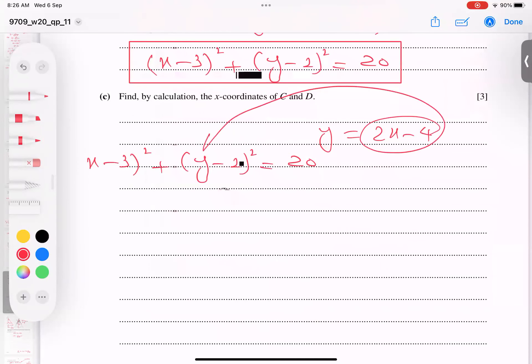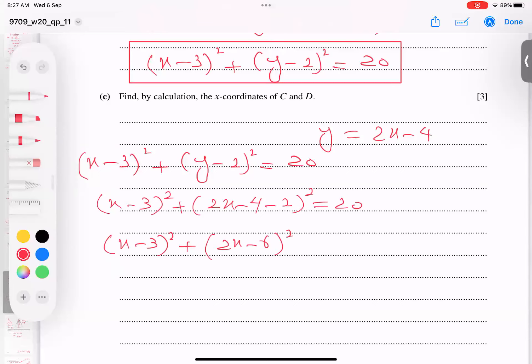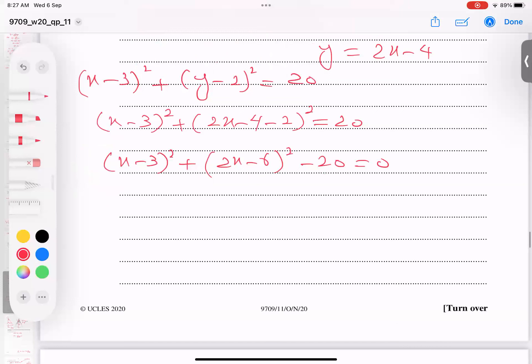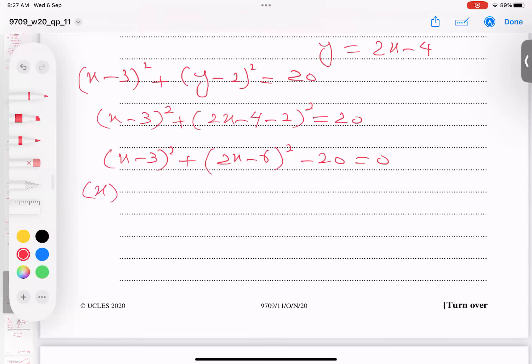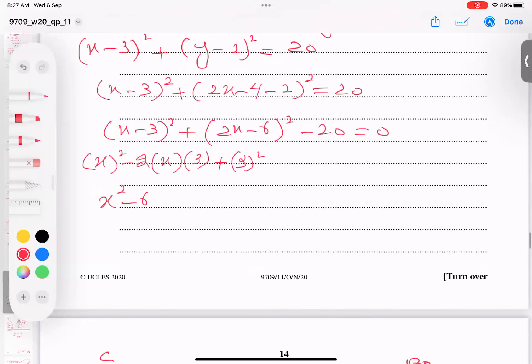So this Y value I'm going to plug in here. So here we have to expand. And Y value is this, so 2X minus 4, but negative 2 is already present. So I get X minus 3 whole square and 2X minus 6 whole square and negative 20 come this side. Here expand the square. I get first term square, negative 2 into first term into second term, plus second term square, which tends to be X square minus 6X plus 9.